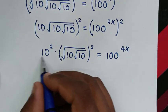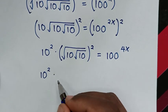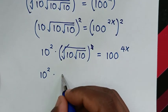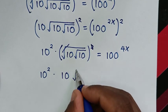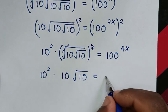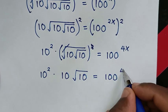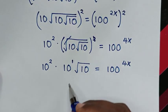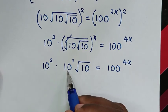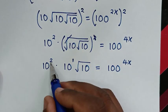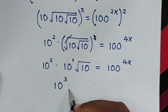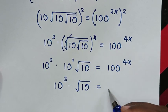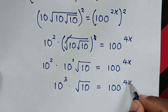Expanding the left side gives us 10 times square root of 10, repeated, which simplifies to 10 power of 2 times 10 power of 2 times 10 power of 2, giving 10 power of 3, times square root of 10. This equals 100 power of 4x.